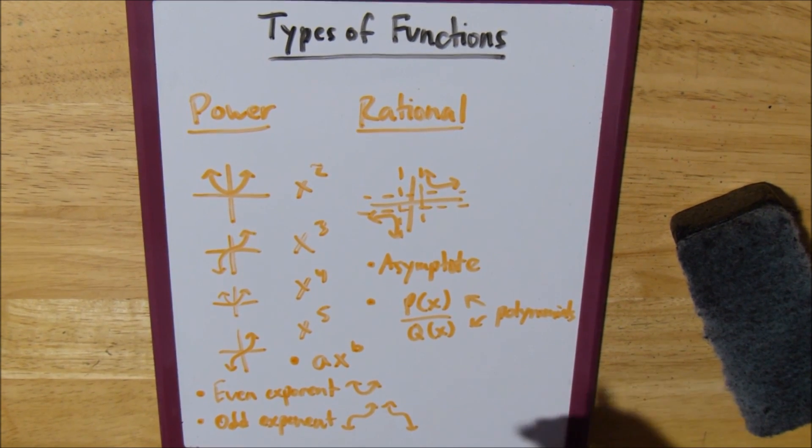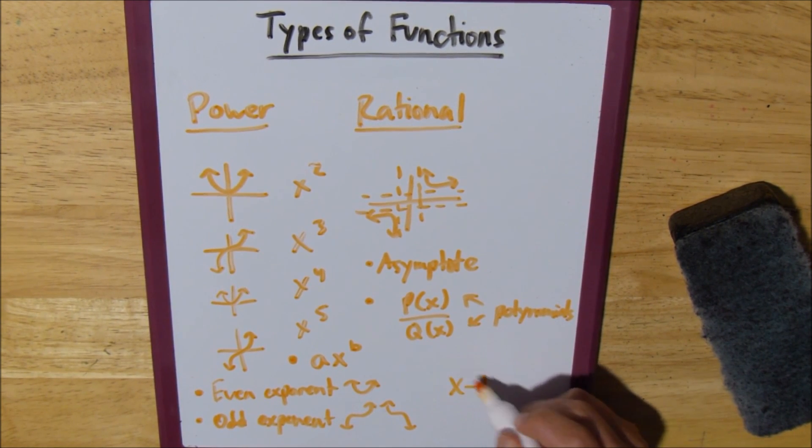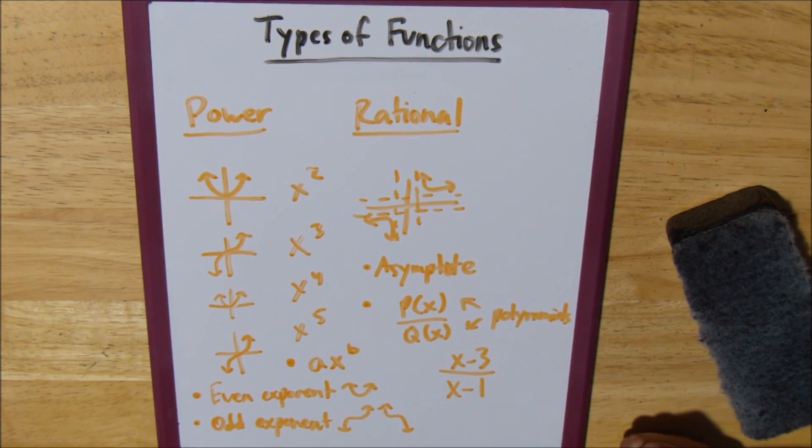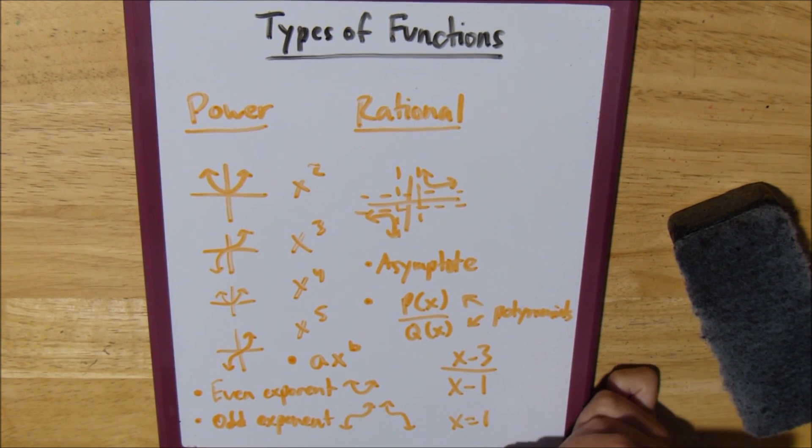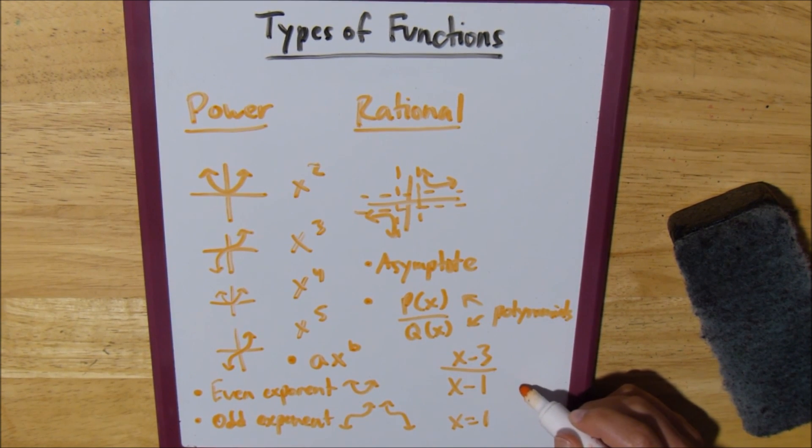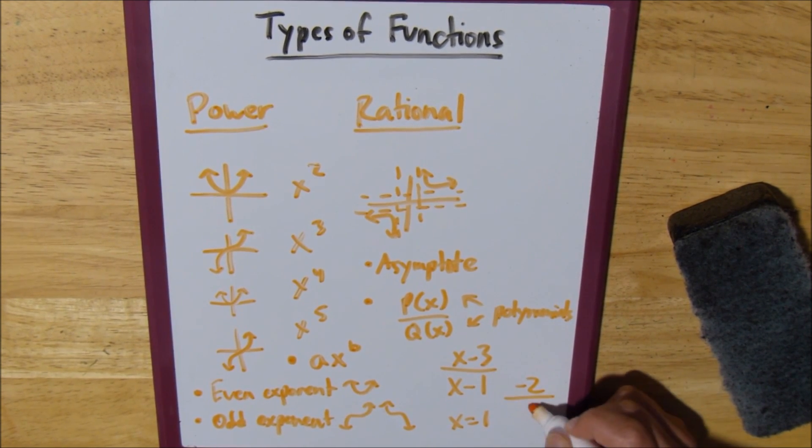So you can figure out where these asymptotes come from. Say, for example, that our bottom polynomial is something like x minus 1 and our top polynomial is something like x minus 3. You would notice that we would have an asymptote where x equals 1. And you want to know why? It's because any time you plug in 1 for x, you get negative 2 over 0.